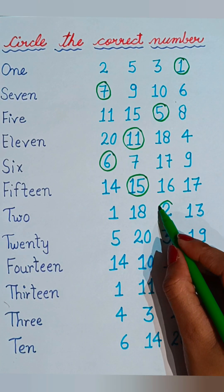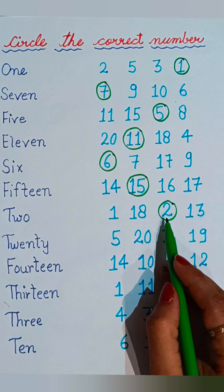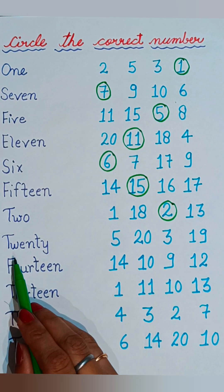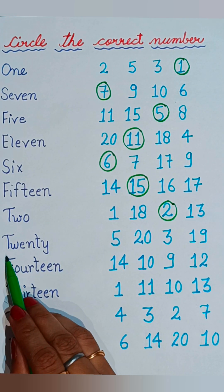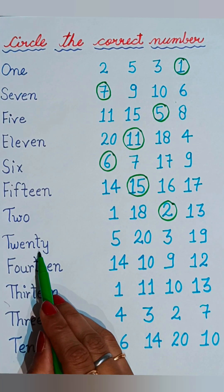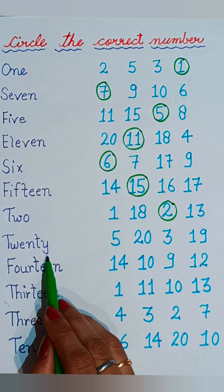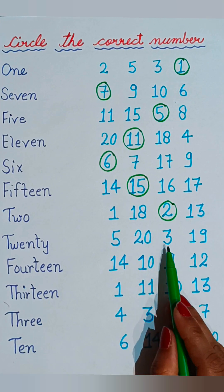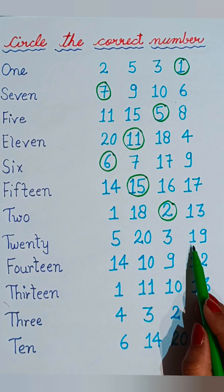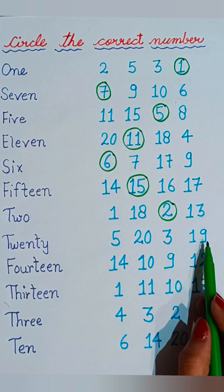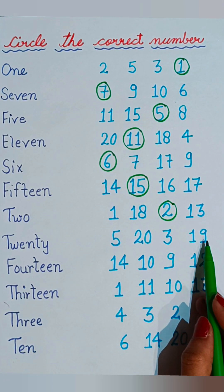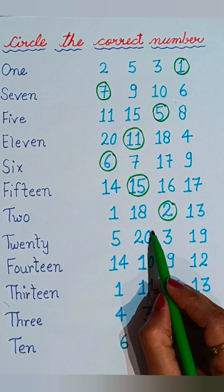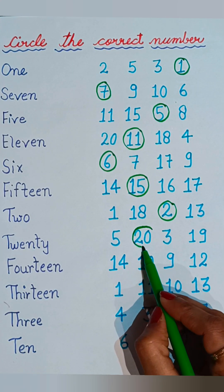Now see the next one: T-W-E-N-T-Y, twenty. See where twenty is given: five, twenty, three, and nineteen. Twenty is given on the second number, so we will circle the correct number twenty.